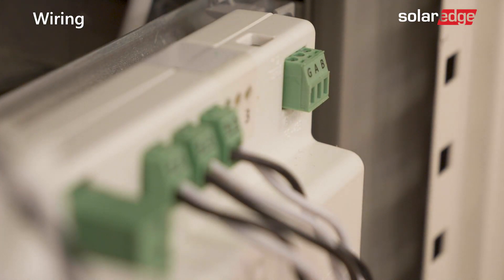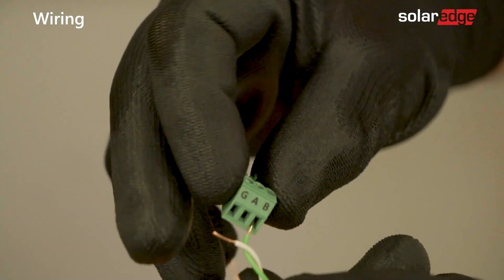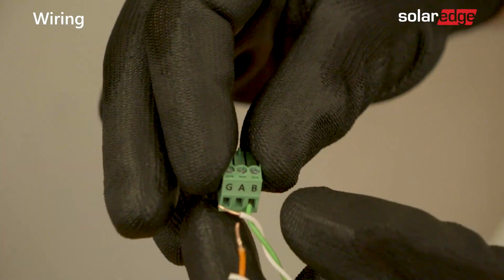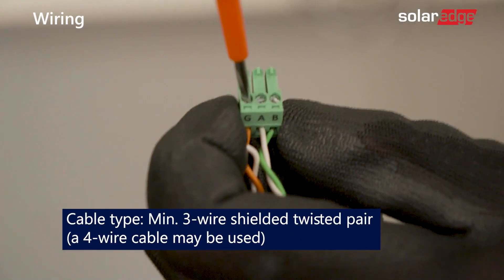Next, pull out the RS-485 connector located on the communication board. Then, connect the RS-485 wires to the A and B terminals, and connect the shield to the G terminal.